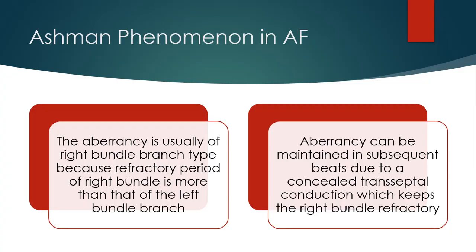The aberrancy is usually of right bundle branch type because the refractory period of the right bundle is more than that of the left bundle branch. Aberrancy can be maintained in subsequent beats due to concealed transeptal conduction, which keeps the right bundle branch refractory.